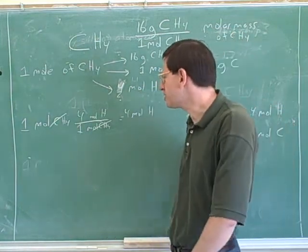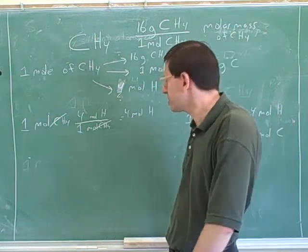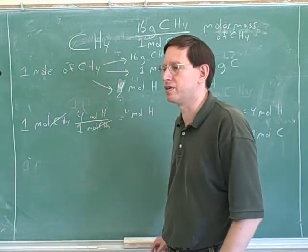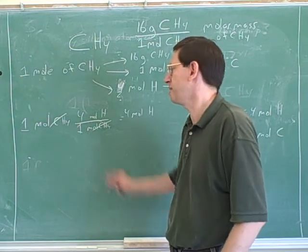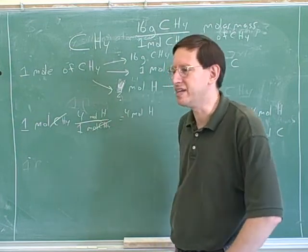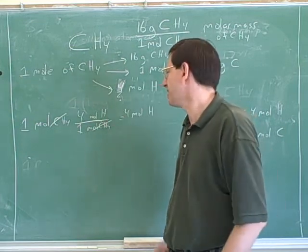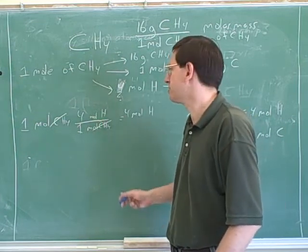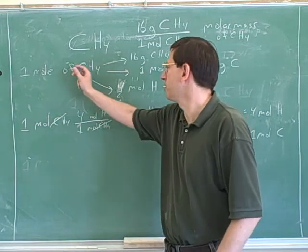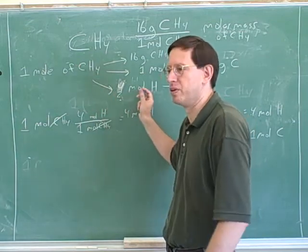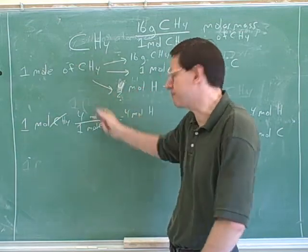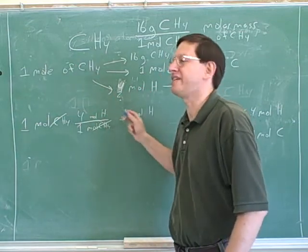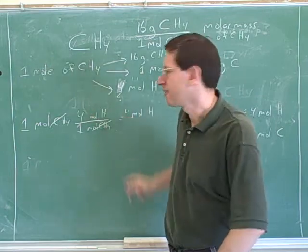This should be so obvious that we shouldn't really have to write it down. Some conversions are so easy we can do them in our head. You should be able to look at this and say, one mole of methane is four moles of hydrogen — you shouldn't have to write it down, but you should be able to write it down if you need to.